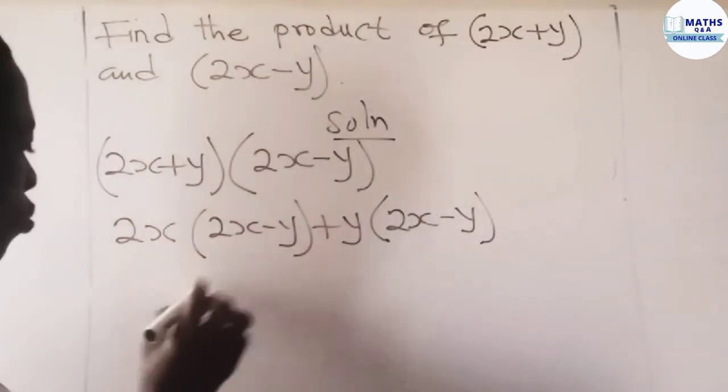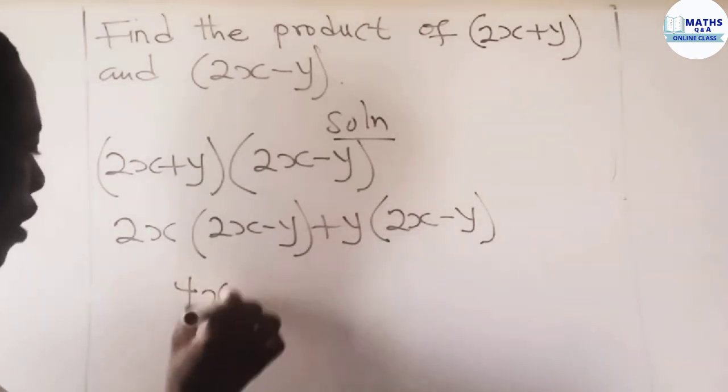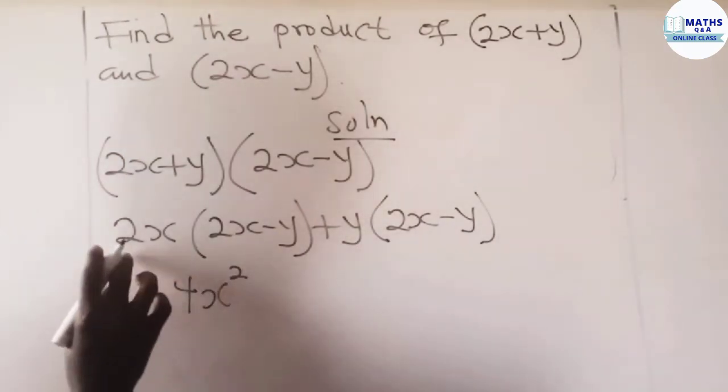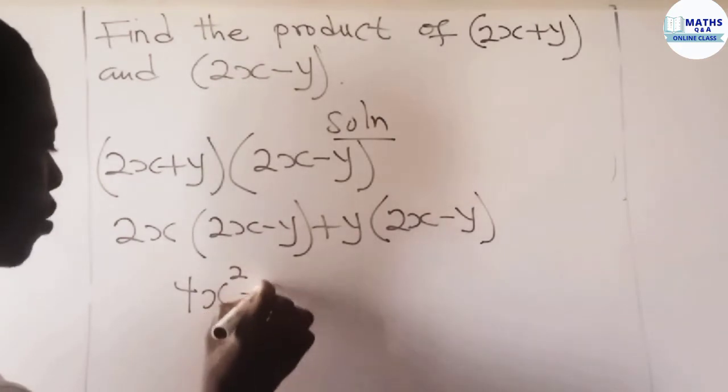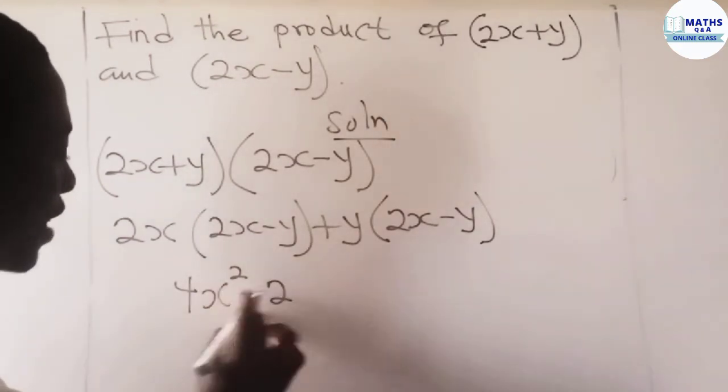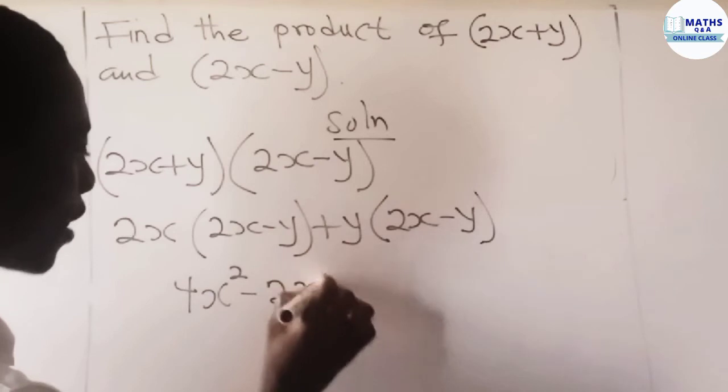So 2x multiply 2x gives what? 4x squared. And then 2x multiply negative y gives negative 2xy.